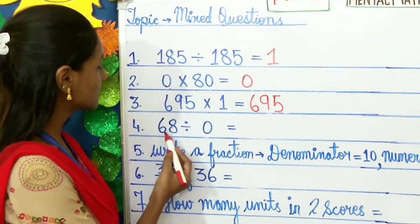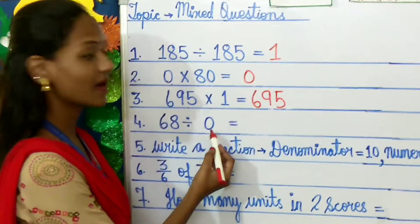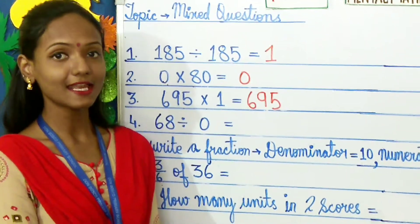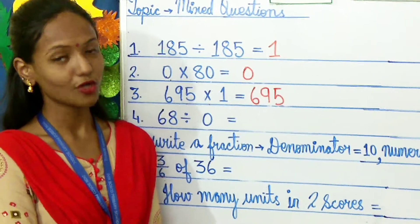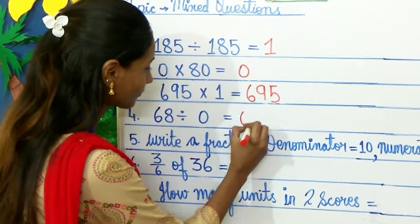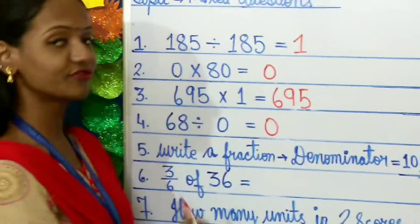What is fourth question children? 68 divided by 0. In properties of division, any number divided by 0, your answer or your quotient will be 0. Moving on to the fifth question.